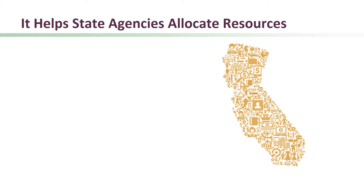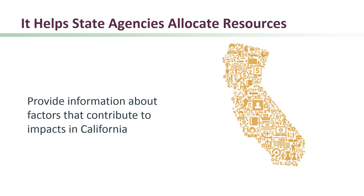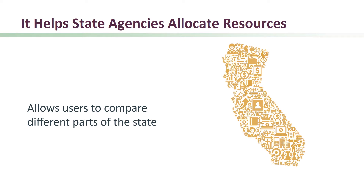CalEnviroScreen was developed to identify places that have multiple sources of pollution and highly vulnerable populations. Having this information helps state agencies decide how to use their resources. The CalEnviroScreen tool can provide information about many of the factors that can contribute to impacts facing any area of California. The approach used by CalEnviroScreen allows anyone using the tool to compare different parts of the state.